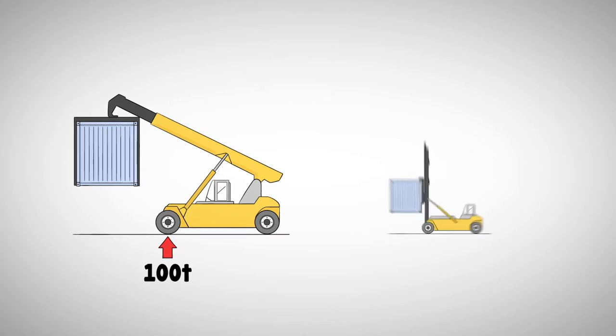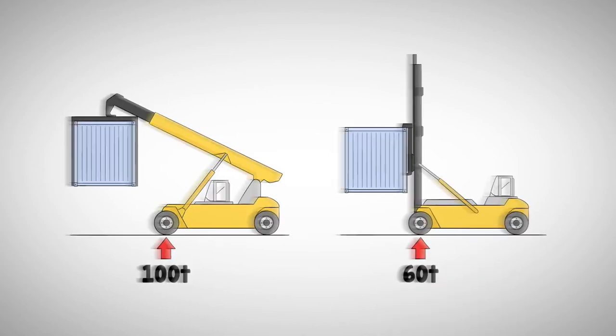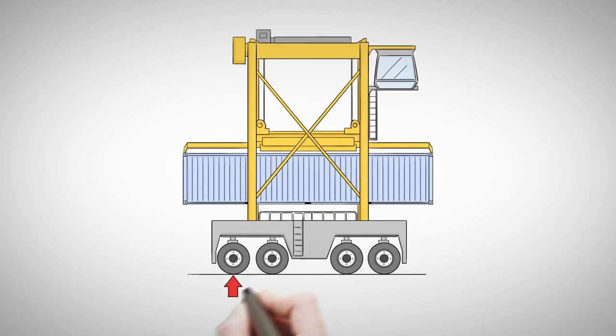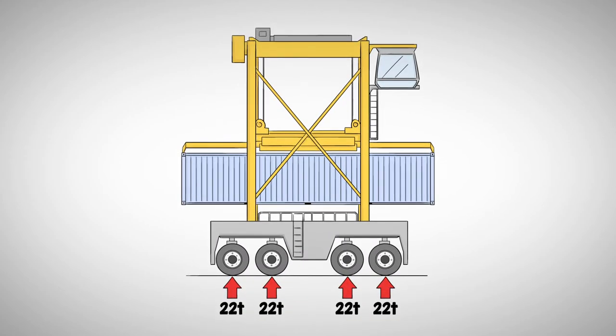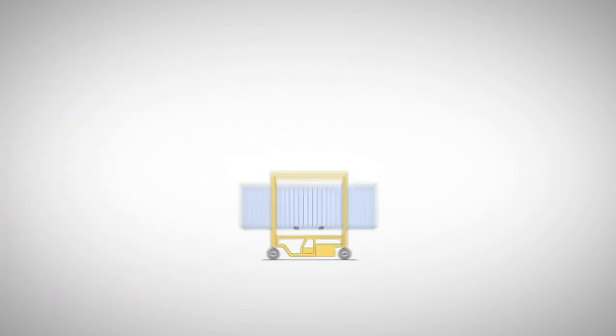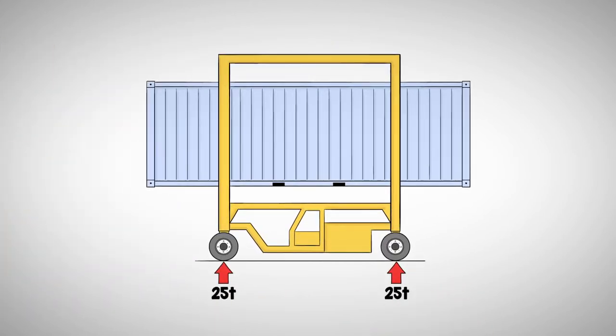A container forklift has an axle weight of 60 tonne. A large harbour straddle carrier, they have four axles but are very heavy, have an axle weight of 22 tonne. A small two axle straddle carrier has an axle weight of 25 tonne.